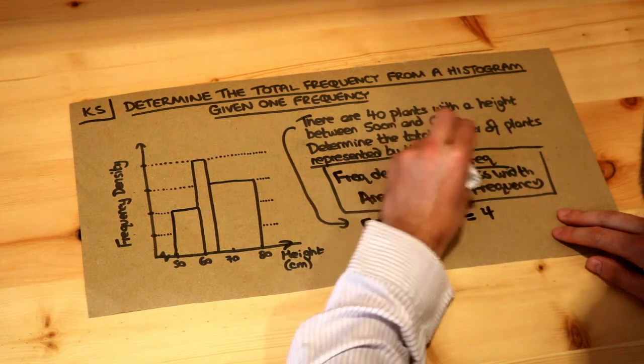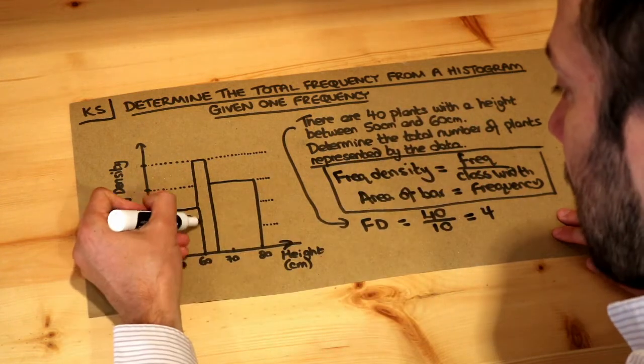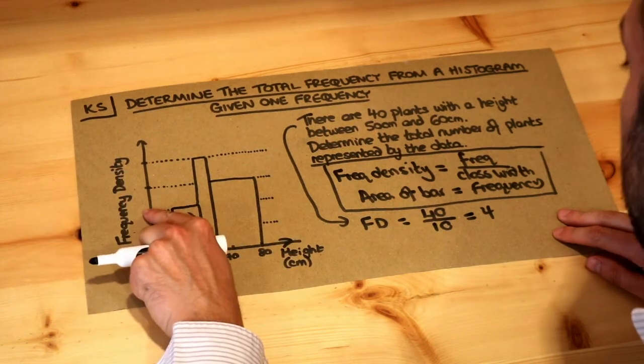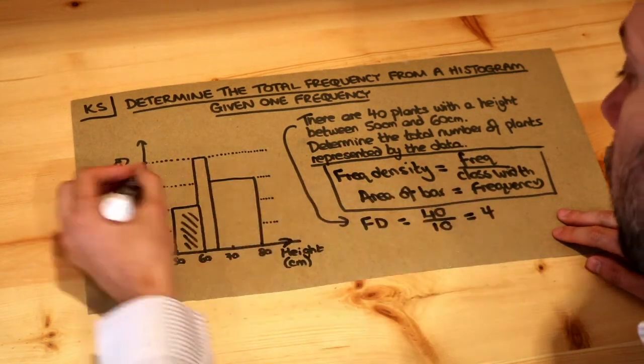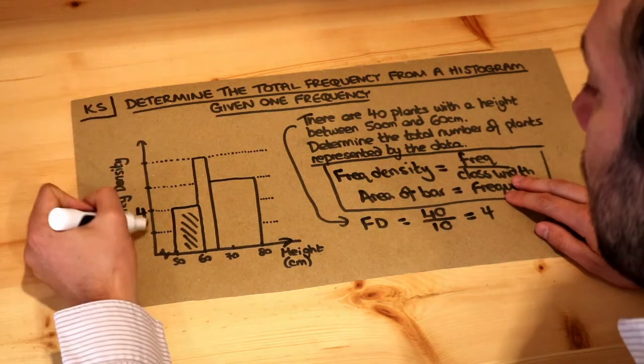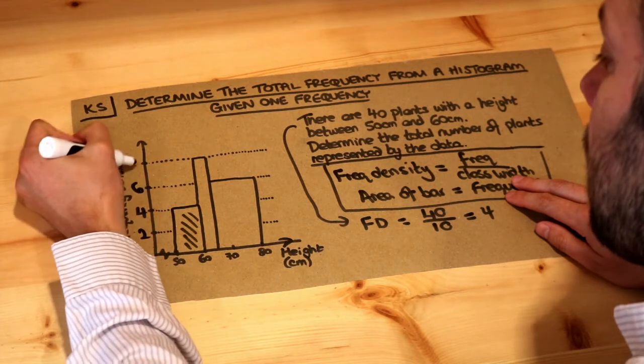So that means the 50 to 60 bar, we know the frequency density, so the top of that bar will be a frequency density of 4. So we put the 4 there and we can see therefore the scale, if it's going up evenly, it's going to be 2, 4, 6, 8, 10, etc.